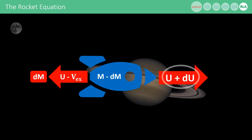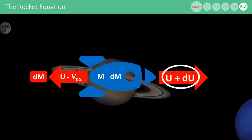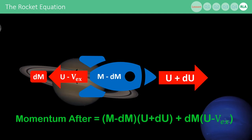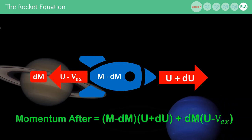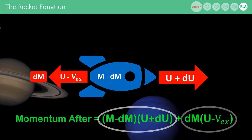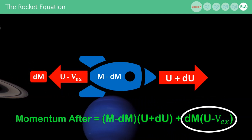The released mass, and the ship has gained a small amount of velocity u plus du. The total momentum after the rocket ignition is now the momentum of the rocket plus the momentum of the released propellant.